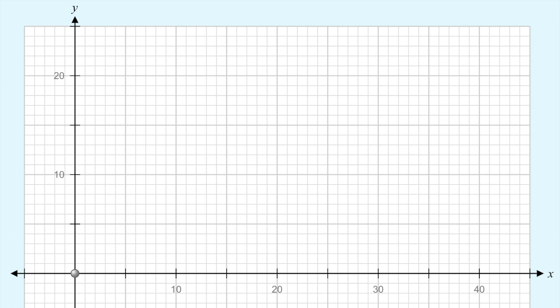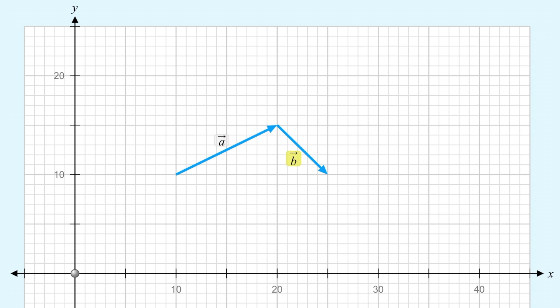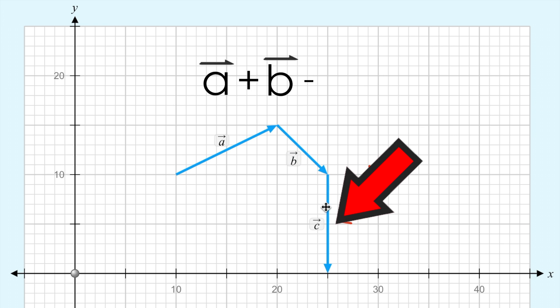Recall from the previous video that subtraction is really just adding a negative. We know that 3 minus 2 is really just the same as taking 3 and adding negative 2. In vectors, negatives just mean the opposite direction. So if this is vector C, and I want to find A plus B minus C,